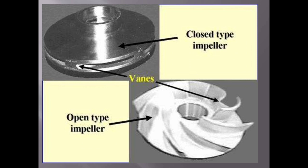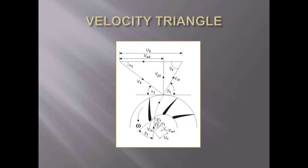Work done will be calculated by the velocity triangle, inlet and outlet triangle. Then, work done by impeller on the water per unit mass: Vw2 u2 minus Vw1 u1.